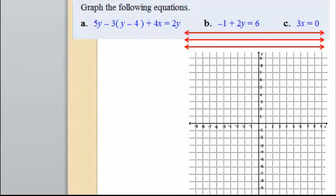Let's start with the first one. We need to try to put it in standard form first. Let's see what we have. We need to distribute this negative three. So, 5y minus 3y plus 12 plus 4x equals 2y.